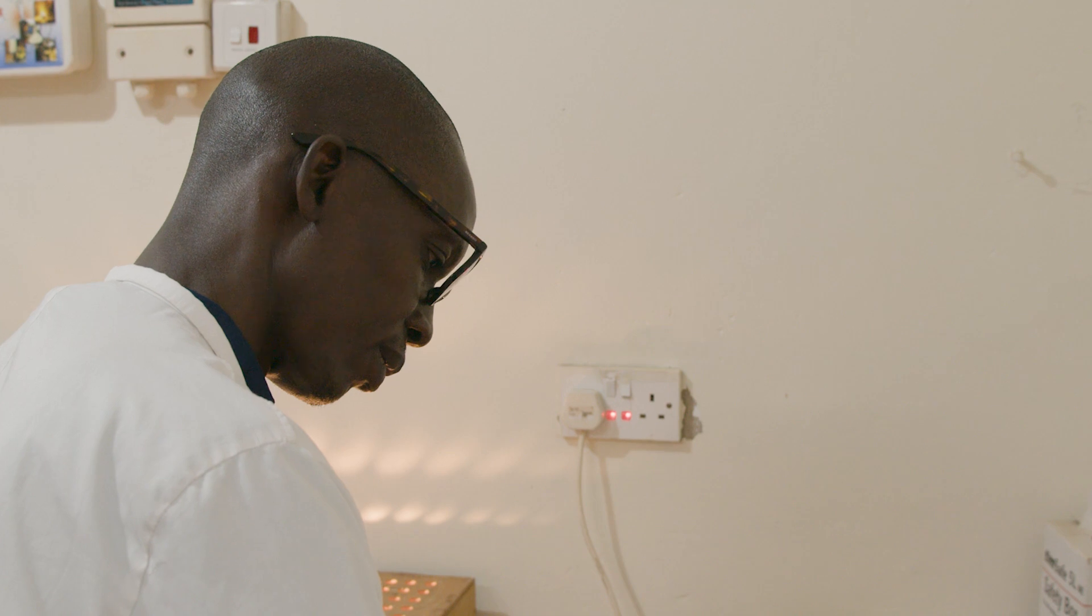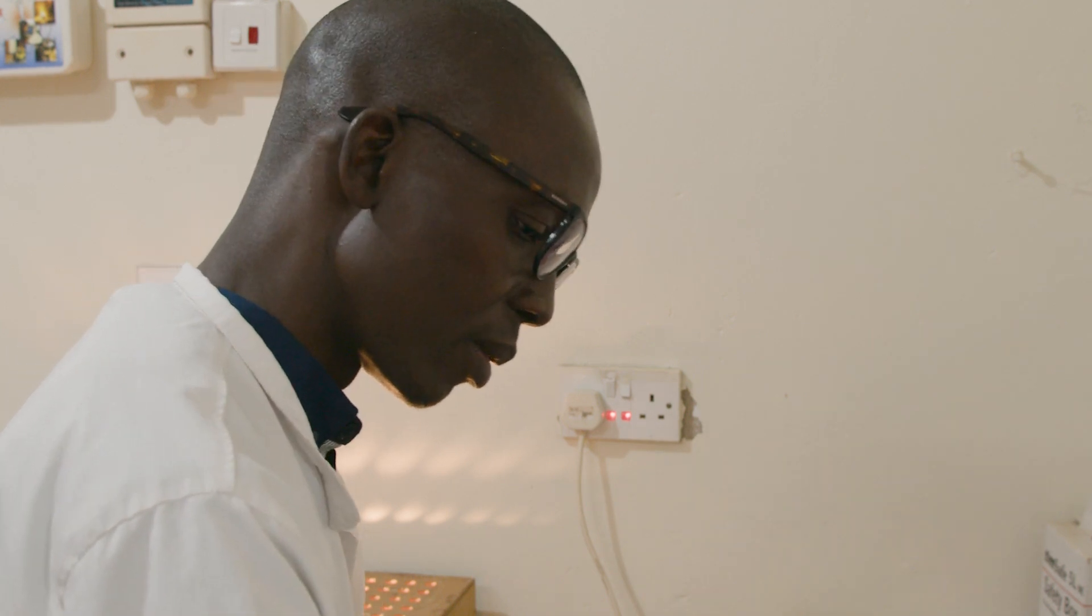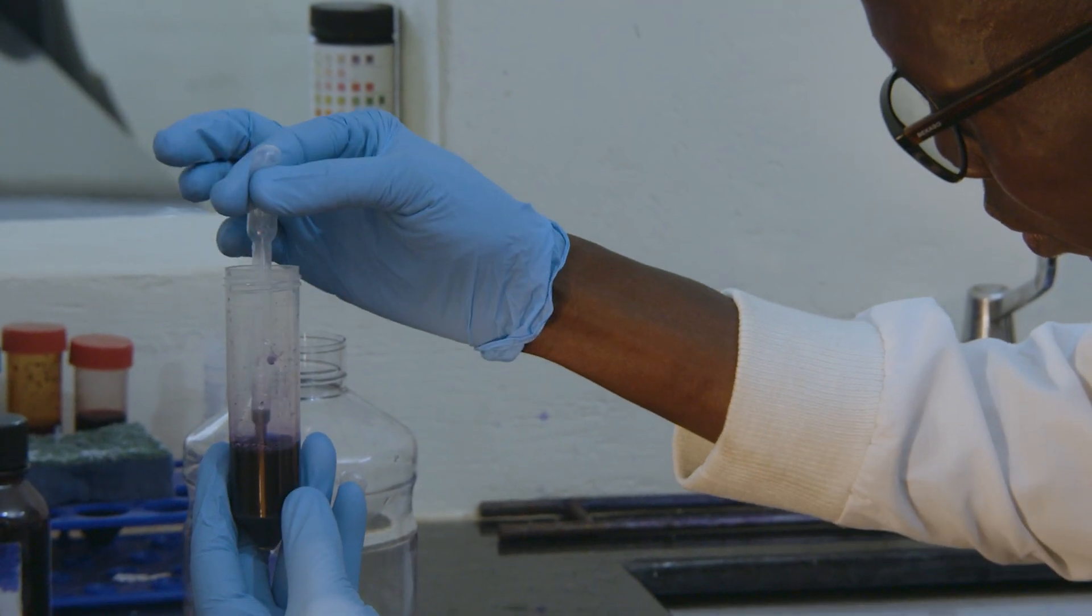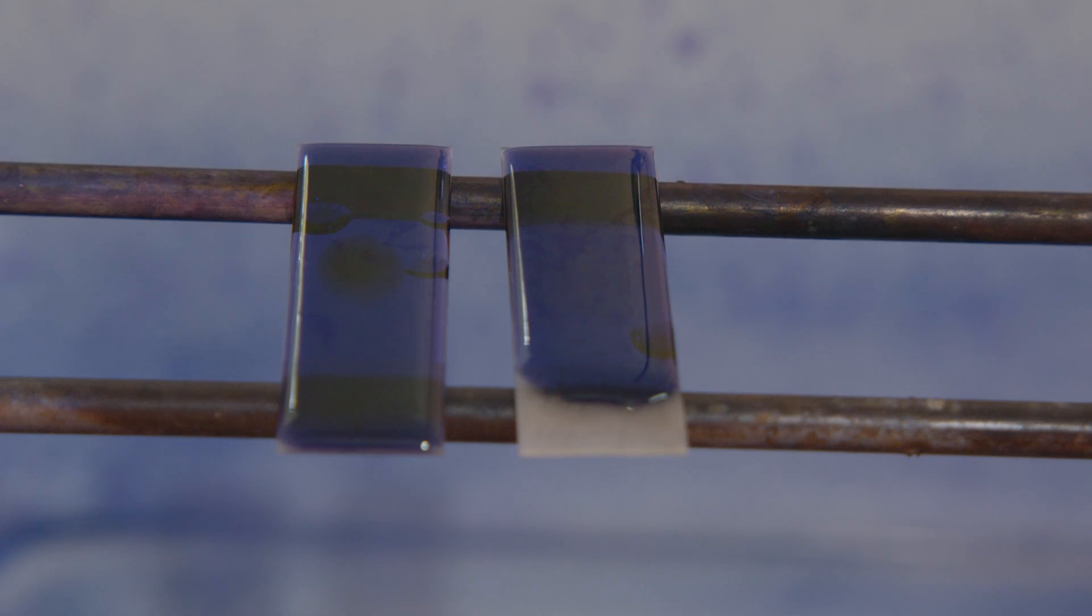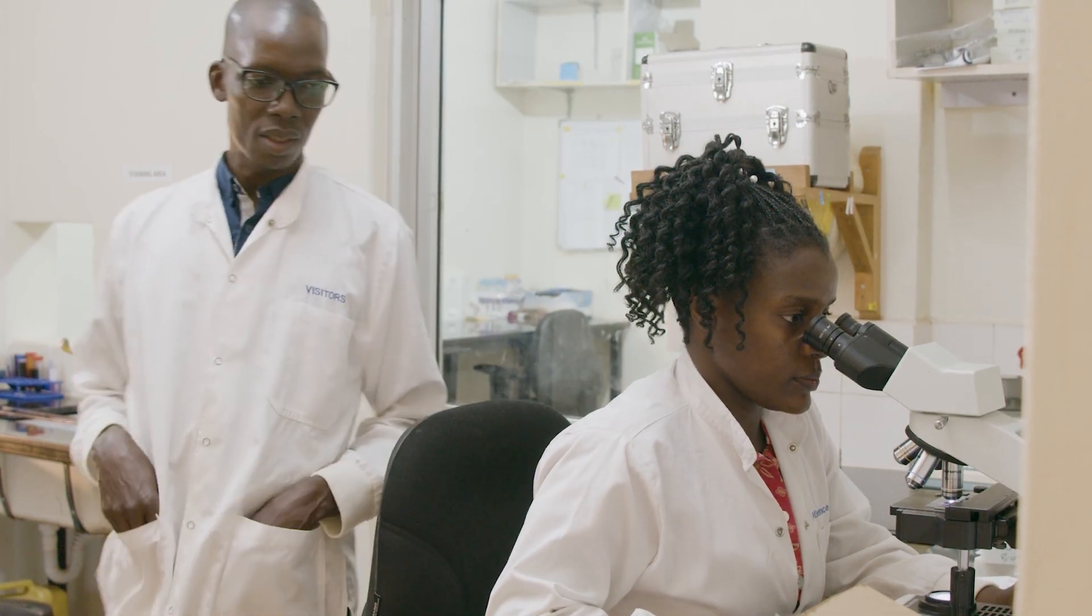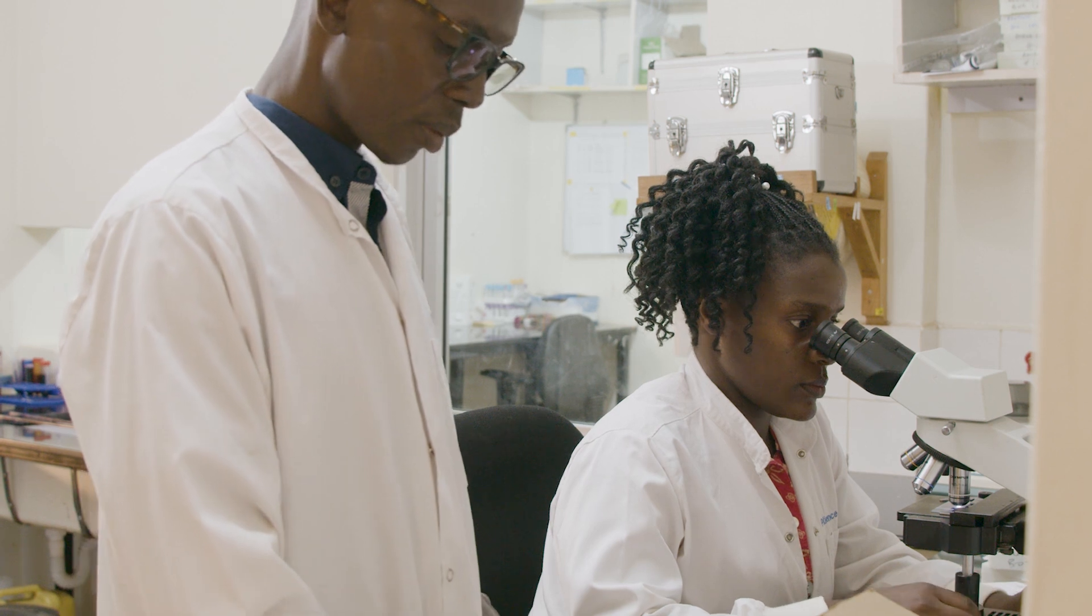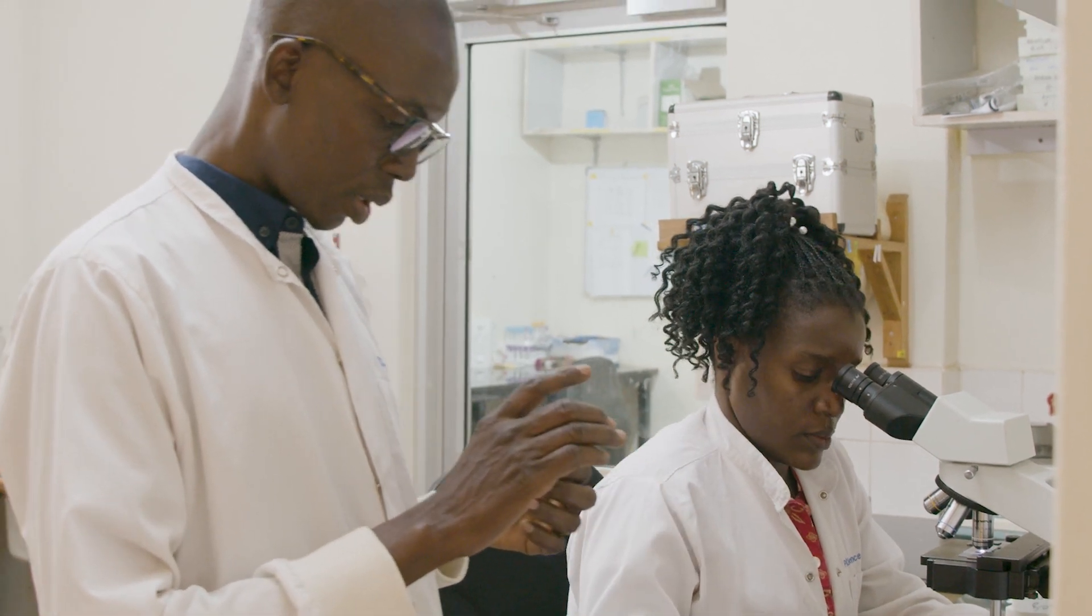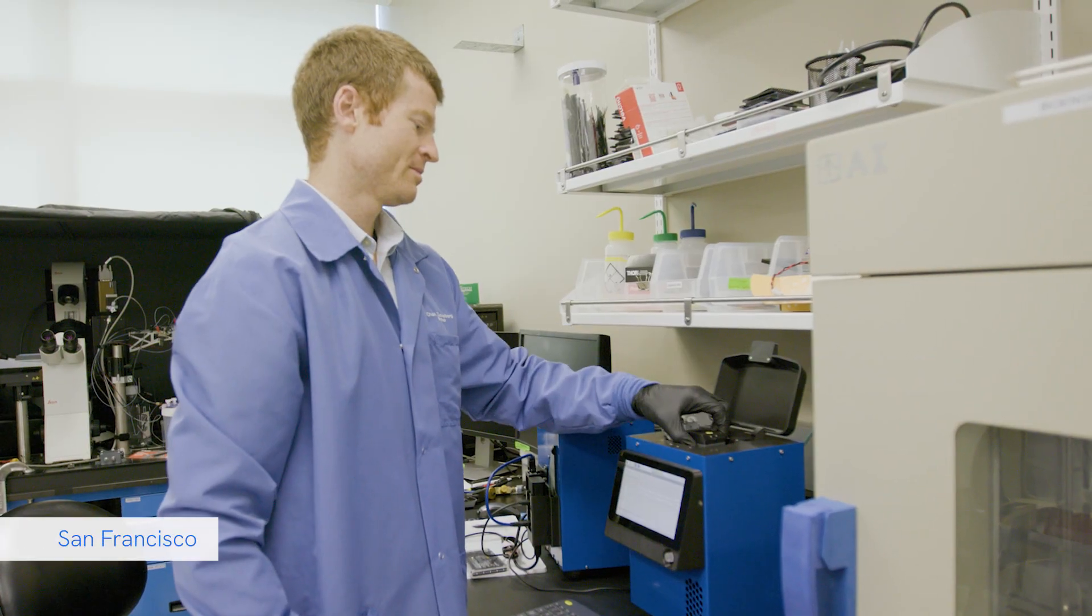This microscope has quite a lot of advantages. We will be able to avoid things like stains, which are very expensive. We will also be able to save time. The conventional method, the minimum time you can give someone the result is one hour. That's still too much compared to the time this machine gives us results. Because if someone is highly parasitemic, in one or two minutes, you already have the result.